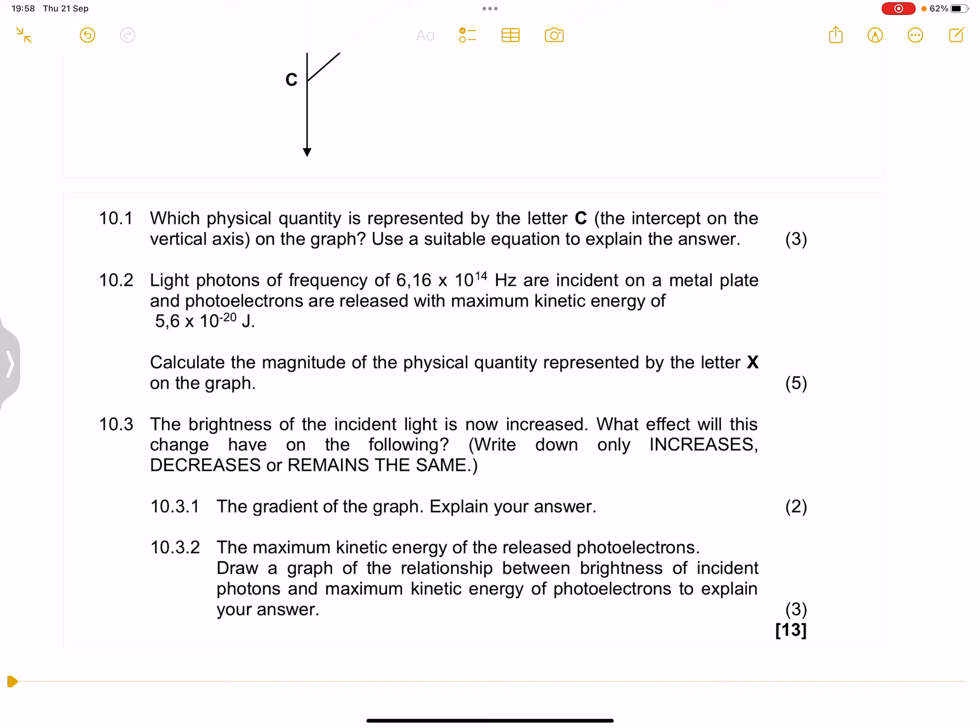So that is the answer that you get. Please verify that answer and make sure that you get to the same thing. So the next question, they say the brightness of the incident light is now increased. What effect will this change have on the following? They say write down increase, decrease or remain the same. So remember, once we increase the brightness before we answer the questions, once we increase the brightness of the light, what happens?